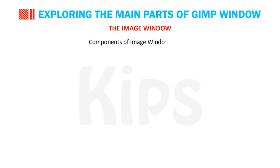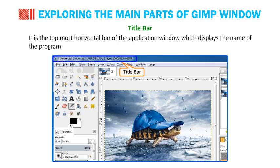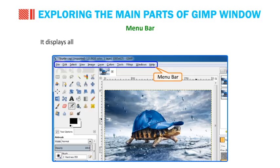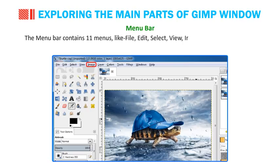Components of the Image Window include the Title Bar, which is the topmost horizontal bar displaying the name of the program. The Menu Bar is placed beneath the title bar and displays all the menus that store various options to manipulate images. The menu bar contains 11 menus: File, Edit, Select, View, Image, Layer, Colors, Tools, Filters, Windows and Help.